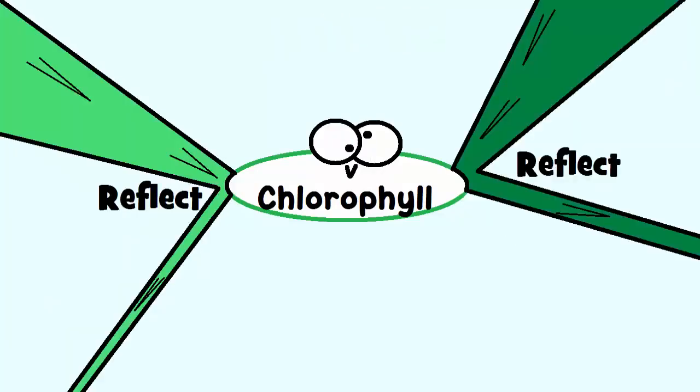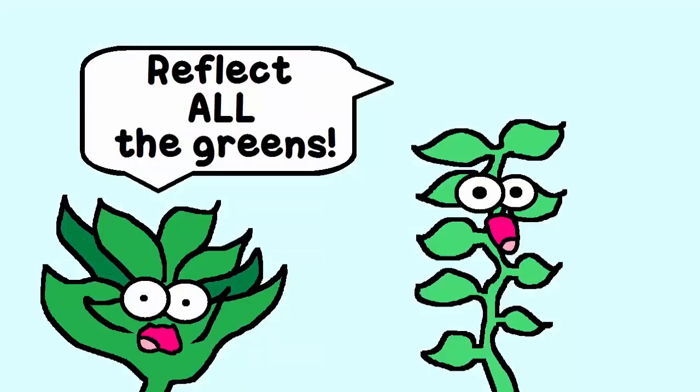Because it does not absorb very much green light, it actually reflects green light. Therefore, many plants appear green to our eyes.